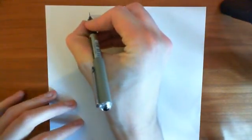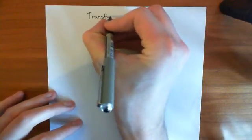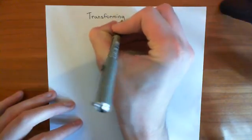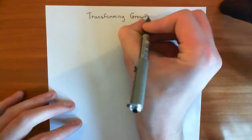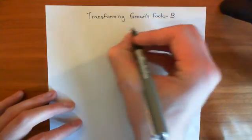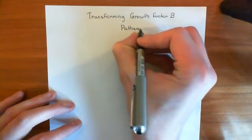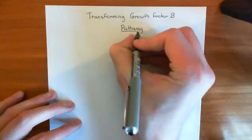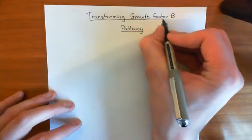Welcome to this next video in the playlist on cancer. In this video, what we're going to talk about is the transforming growth factor beta pathway. This is a growth-inhibiting pathway. So if you've got a cell that is undertaking division — basically undergoing the cell cycle — then the transforming growth factor beta pathway can actually stop it midway in the cell cycle and stop it from continuing to divide. We're going to have a look in this video at how it achieves that.